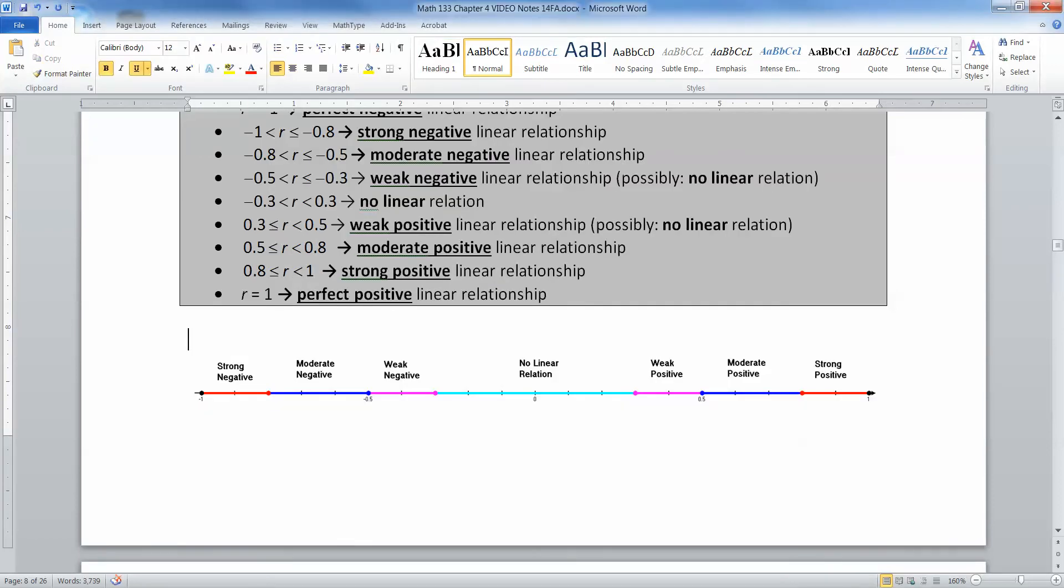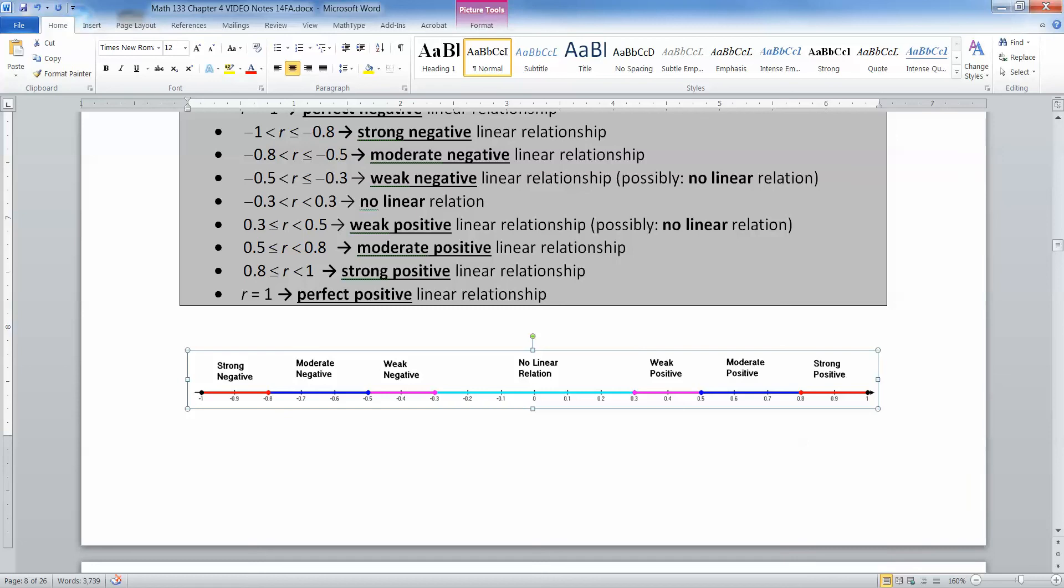There we go. I managed to get it all in there, except for the perfects. The perfects are at the dots at the end. We have the strong in the red, strong negative on the left, strong positive on the right. Anywhere between negative 0.8 and negative 1 is strong negative. Anywhere between positive 0.8 and positive 1 is strong positive. I'm going to put the rest of the labels in. So 0.8 to 1 is strong. 0.5 up until 0.8, but notice I put the red dot at 0.8 because 0.8 technically is on the strong side. So 0.7999 is in the moderate, that's the blue zone.